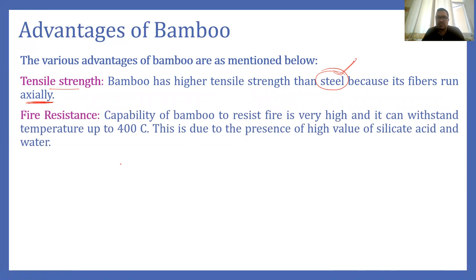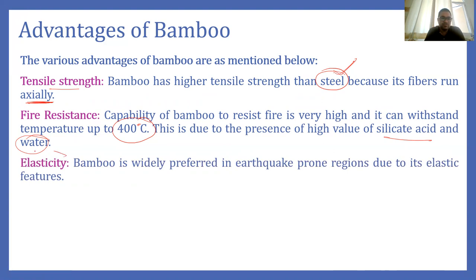Bamboo has very high fire resistance because of the presence of silicate acid and water. A bamboo can withstand temperatures up to 400 degrees Celsius. The third advantage is elasticity — bamboo has very high elasticity and it is widely preferred in regions where there are chances of earthquake. In earthquake-prone regions, bamboo is widely used because of its high elastic properties.